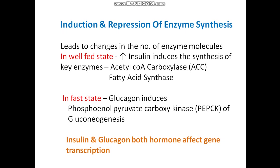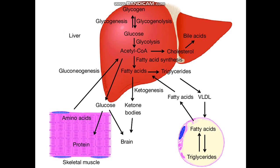In the fasted state, glucagon is high and induces phosphoenolpyruvate carboxykinase of the gluconeogenesis pathway. Glucose is not available in the fasted state, so gluconeogenesis is induced by glucagon. Both insulin and glucagon affect gene transcription through their respective enzymes.